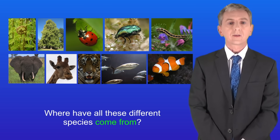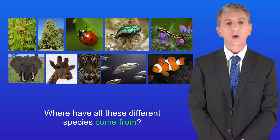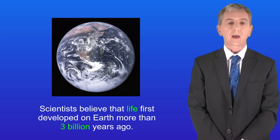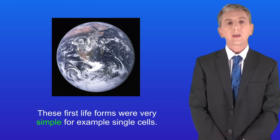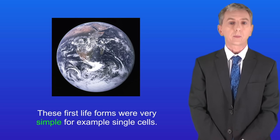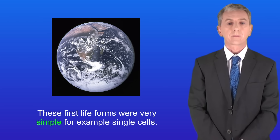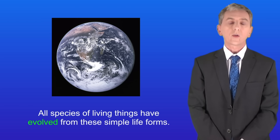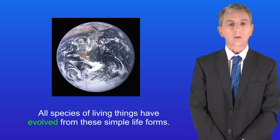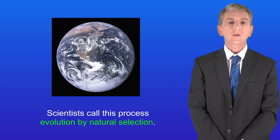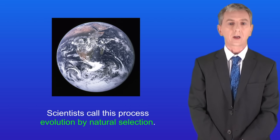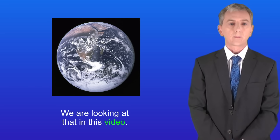So the question is where have all these different species come from? Scientists believe that life first developed on earth more than three billion years ago. These first life forms were very simple, for example single cells. All species of living things have evolved from these simple life forms.